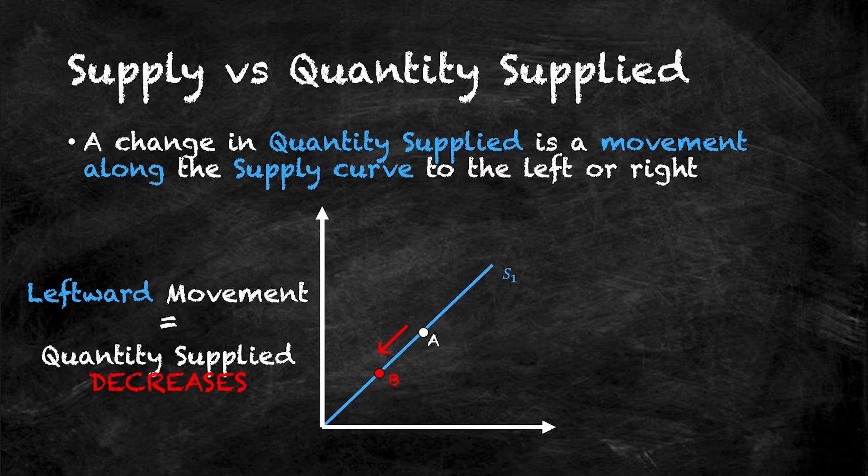Notice that there is no new supply curve. I'm still on the original S1 curve. Therefore, there has been no change in supply, only a change in quantity supplied.